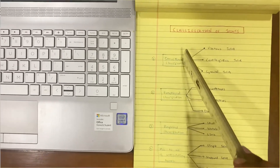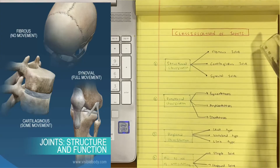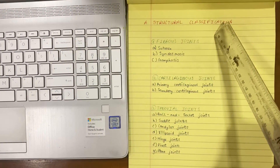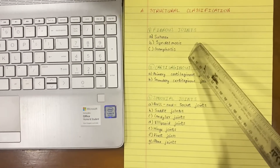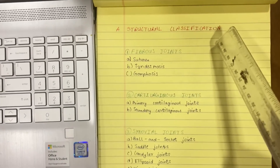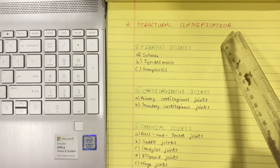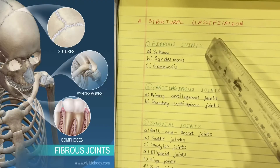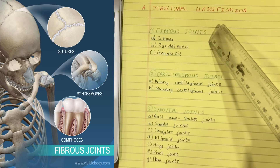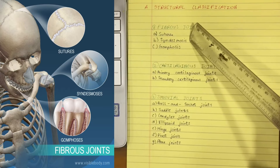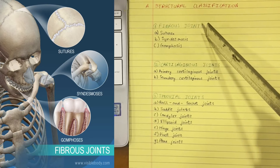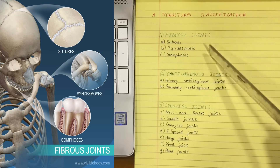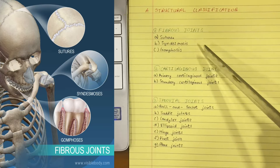Now let us dive into the structural classification. Structural classification is divided into the fibrous joint, cartilaginous joint, and the synovial joint. In fibrous joints, the bones are joined by fibrous tissue. These joints are either immobile or permit a slight degree of movement. Sutures are present only in the skull, separated by connective tissue. Syndesmosis is a fibrous union between bones, represented by the intraosseous ligament as in the inferior tibiofibular joint. Gomphosis is a peg and socket junction between the tooth and its socket.